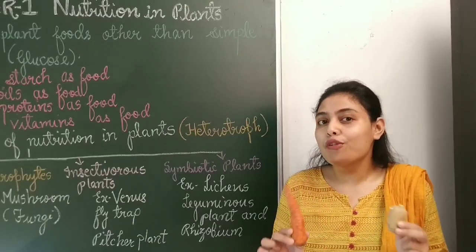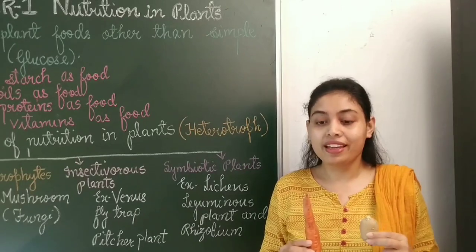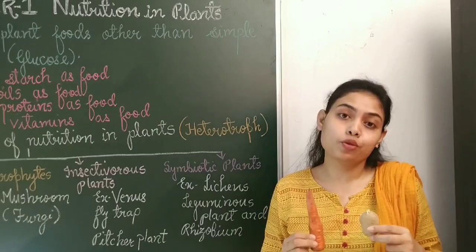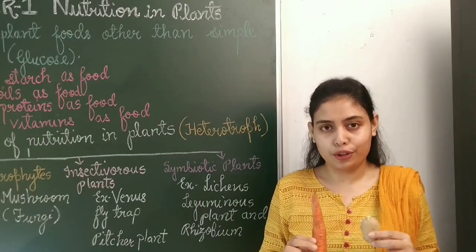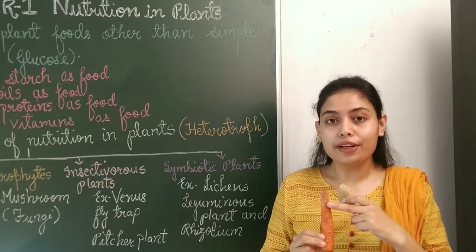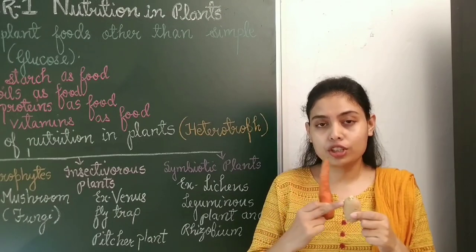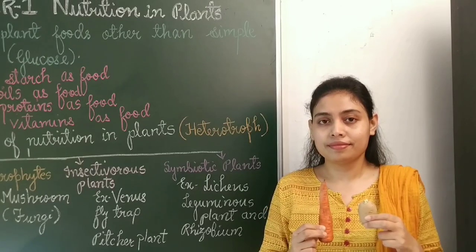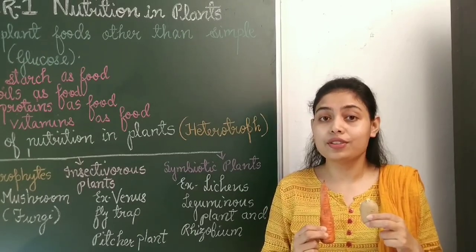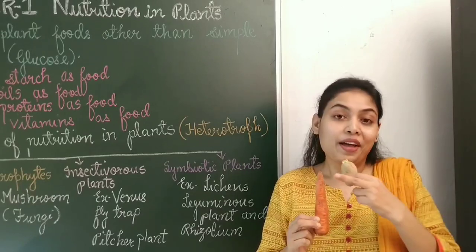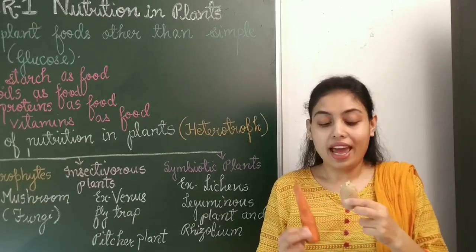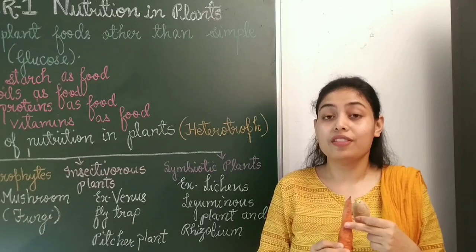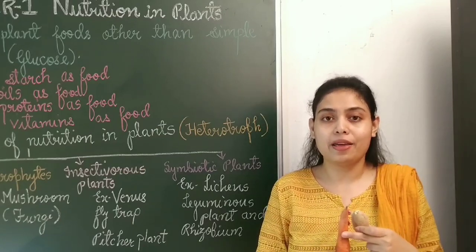Can you guess the name of these vegetables? This is carrot and this is potato. Tell me: carrot is which part of the plant, and potato is which part of a plant? If you know the answer, write it down in the comment section. Carrot is the root and potato is a stem. Plants store extra starch in the root and stem and we eat them as vegetables.